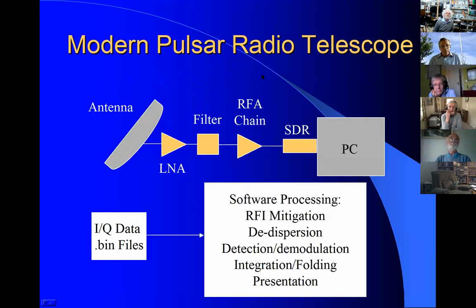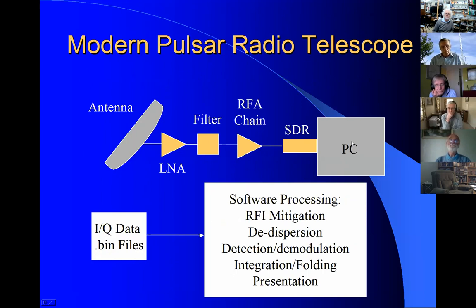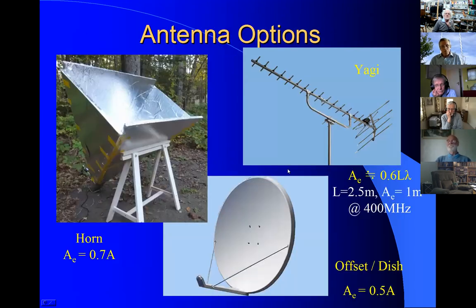A modern pulsar radio telescope looks like this: an antenna, a low noise amplifier, an essential filter, an RF chain, a software-defined radio, and a PC to collect the data. The data comes in binary files in complex form — I and Q — and then you feed this into some software processing that gets rid of some of the RFI, de-disperses the signal, detects it, integrates, folds it, and presents it to you. So it's quite a simple sort of system.